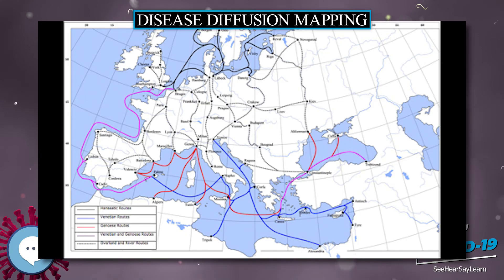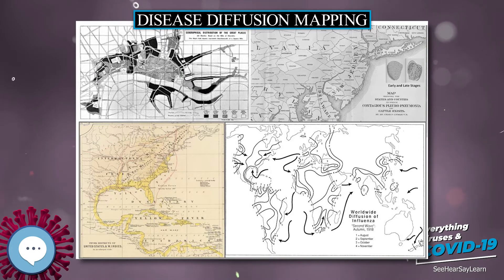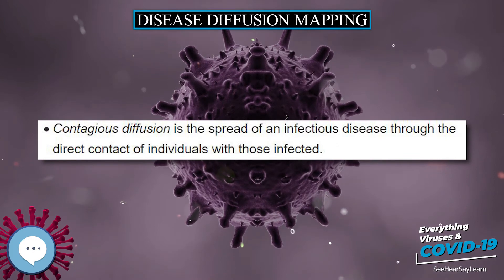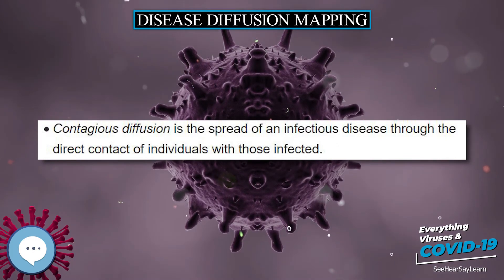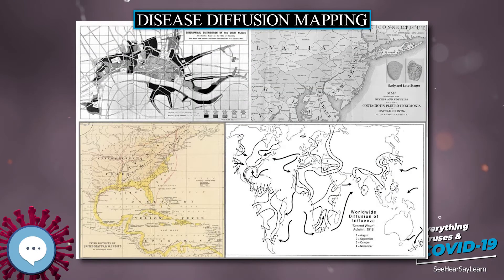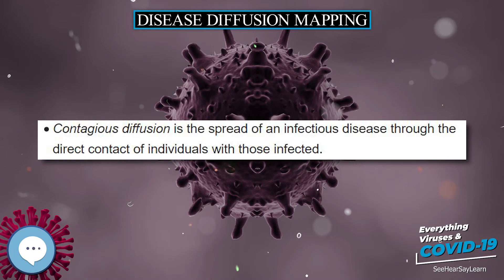Dorsten Hagerstrand's early work on waves of innovation is the basis that many medical cartographers and geographers use for mapping spatial diffusion. The diffusion of disease can be described in four patterns: Expansion Diffusion, Contagious Diffusion, Hierarchal Diffusion, and Relocation Diffusion. Cromley and McLafferty also mention Network Diffusion and Mixed Diffusion.